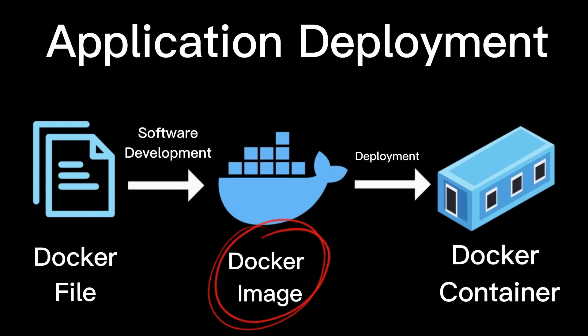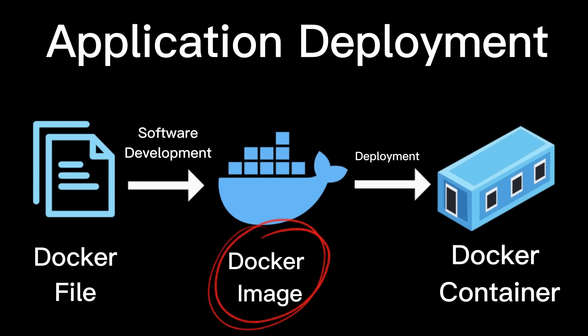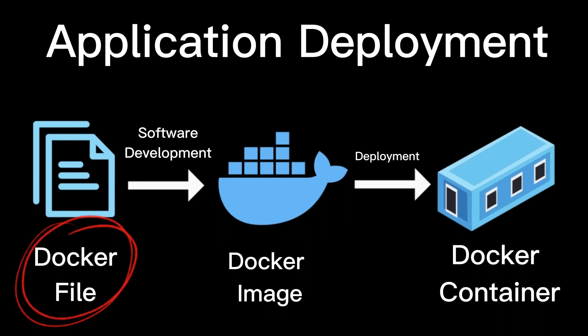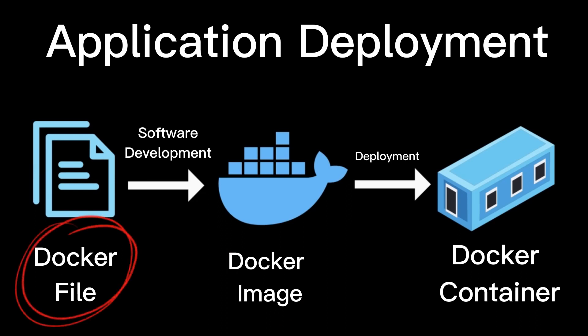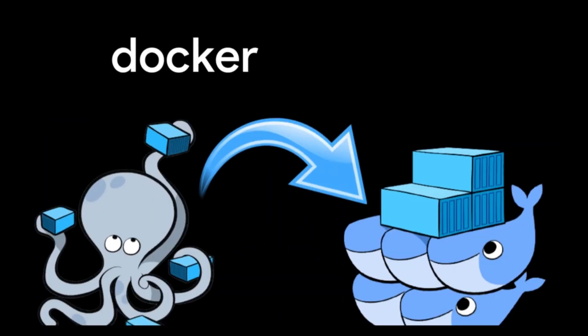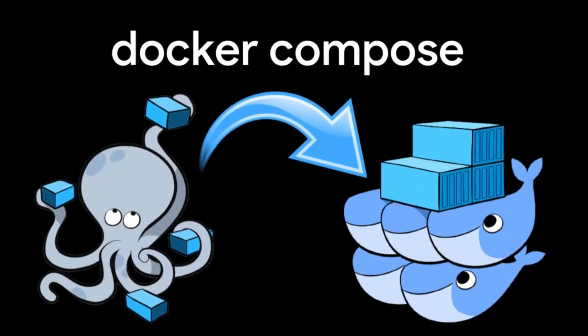An image is like a blueprint of a container, defining what an application needs to run correctly. A Dockerfile is a simple text file that defines how to build a Docker image. I'll show you how to create a Dockerfile and explain its syntax. I'll also cover Docker Compose, which is a tool for defining and running multi-container Docker applications.